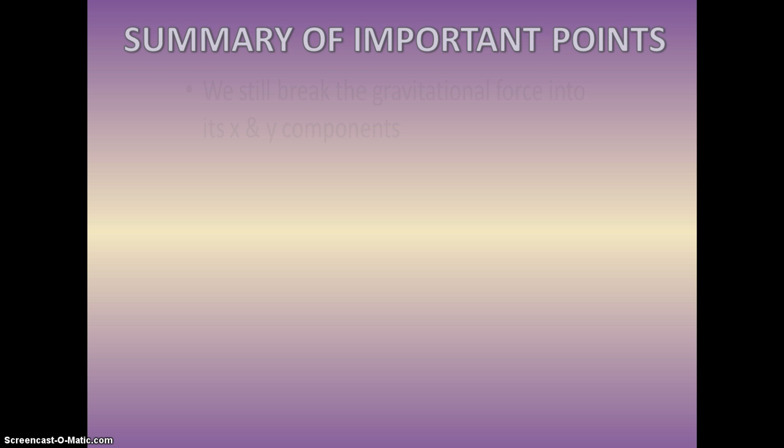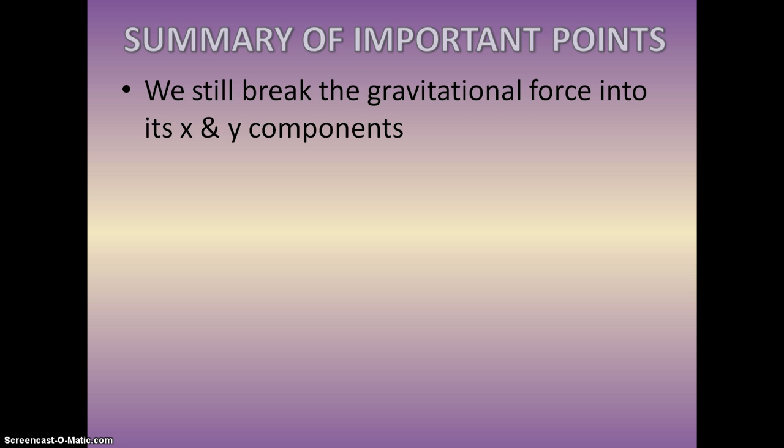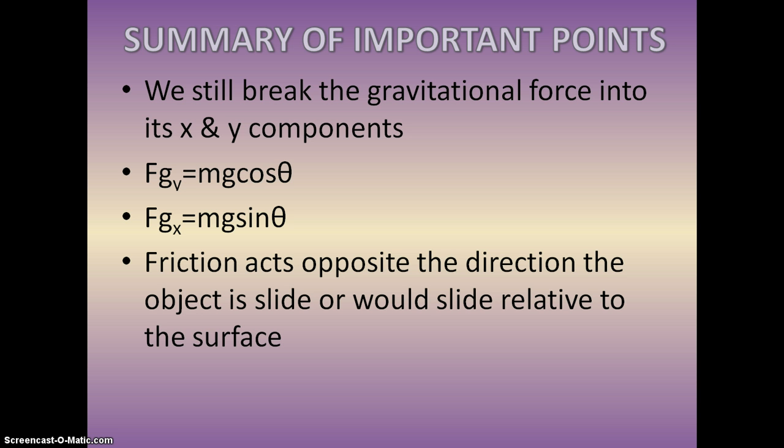So to summarize what we've done so far, we basically still break gravity up into its X and Y components, because that force is at an angle with respect to X and Y. The force of gravity in the Y is MG cosine theta. The force of gravity in the X is MG sine theta. Hopefully, at this point, you're starting to memorize it after doing a few problems. And friction always acts opposite direction an object would slide, or is sliding relative to a surface. This has not changed since our previous topic.